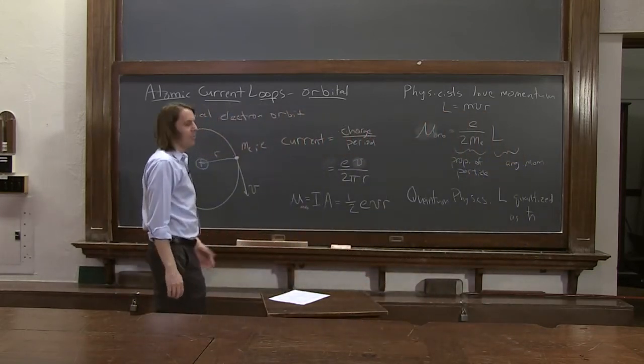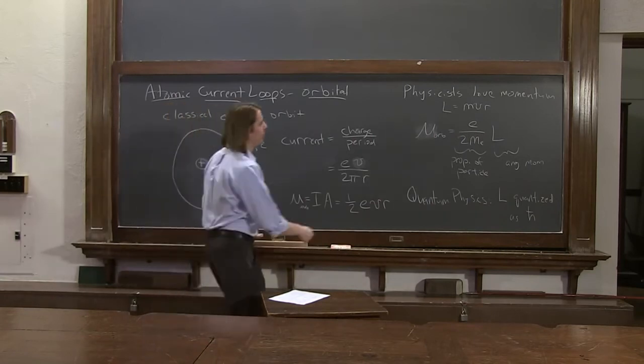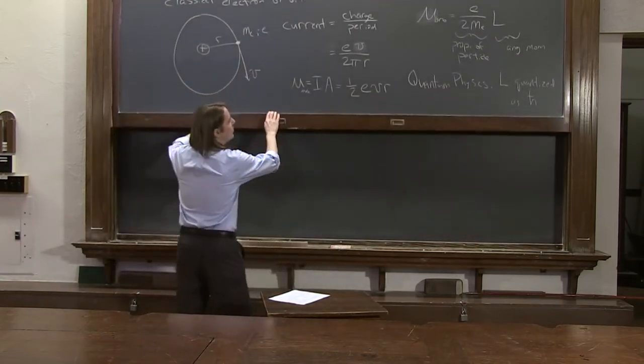Planck's constant is h, h-bar is Planck's constant over 2 pi. Okay, so let me give you some values, if you want to use this.